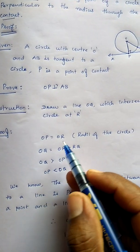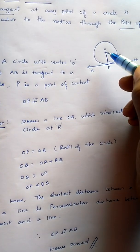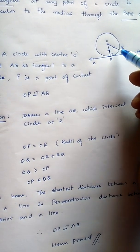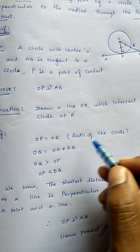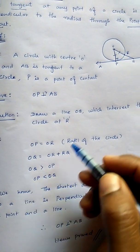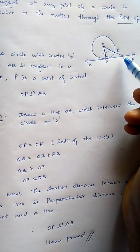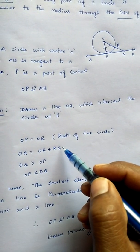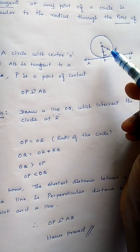OP is equal to OR because the radius of the circles are equal, so we can take it. Then OQ is equal to OR plus RQ. So that's what we are writing.